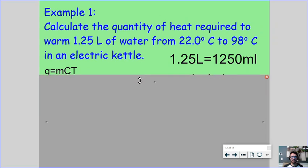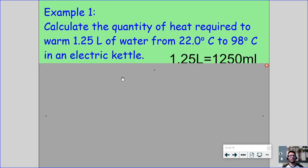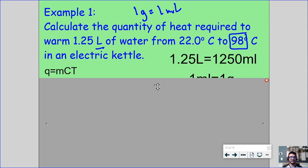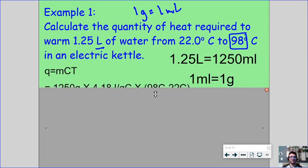Let's do some examples. So here calculate the quantity of heat required to warm 1.25 liters of water from 22 degrees Celsius to 98 degrees Celsius in an electric kettle. Ideally this is the temperature needed to steep tea, so perfect. We have something to do first. This is in liters. We want milliliters because we know that 1 gram of water is equal to 1 milliliter. So remember there are 1,000 milliliters for every 1 liter. So that means 1.25 liters is equal to 1,250 milliliters, which then allows us to plug in a value that mass is equal to 1,250 grams. Remembering that 1 milliliter is equal to 1 gram.